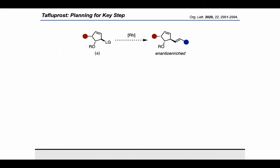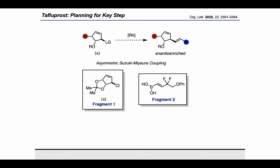Taking a closer look at the enantioconvergent allylic substitution, the Fletcher Group decided to use an asymmetric Suzuki-Miyaura approach, which would require the synthesis of two fragments in order to get the ball rolling.